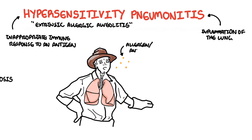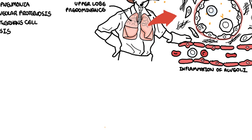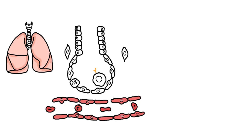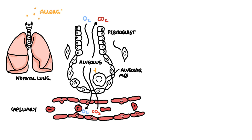In hypersensitivity pneumonitis, you have inhalation of organic allergens or antigens that causes an inflammatory response, causing fibrotic changes with an upper lobe predominance. The normal lungs are made up of units called alveoli, consisting of alveolar cells, fibroblasts, alveolar macrophages, and capillaries, where gas exchange takes place. Some people may become sensitized to a particular antigen after an initial exposure.